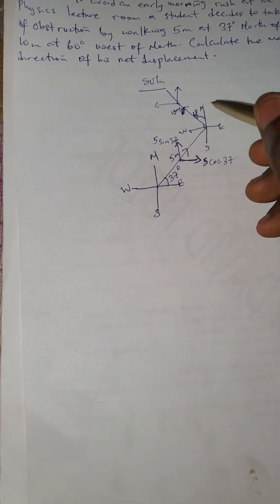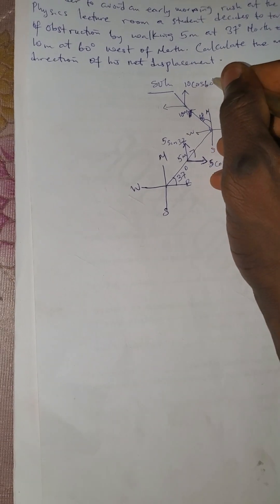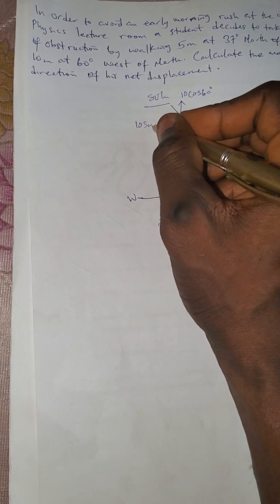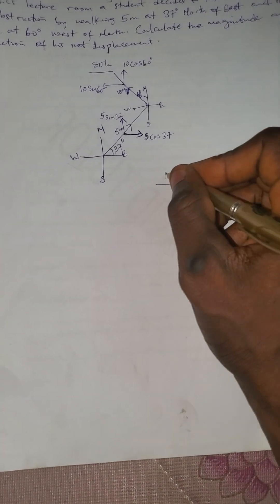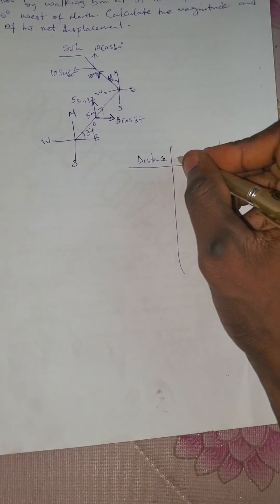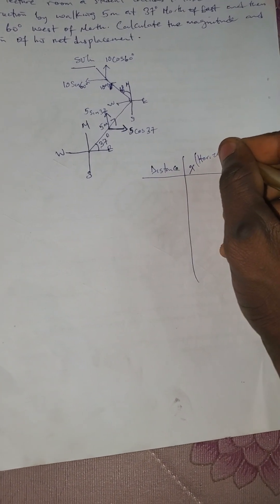For the 10-meter vector, 10 meters is going like this. The side where you have theta will now be 10 cos 60, and the side without theta will be 10 sine 60. Going to the table: we have the distance, the x component — horizontal — and the y component — vertical.